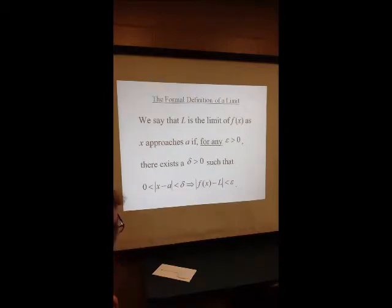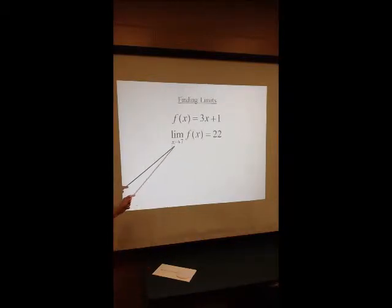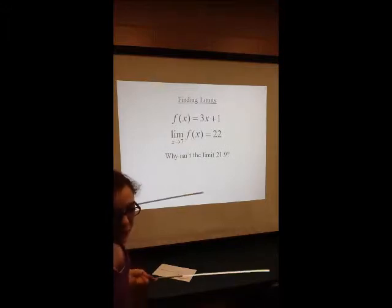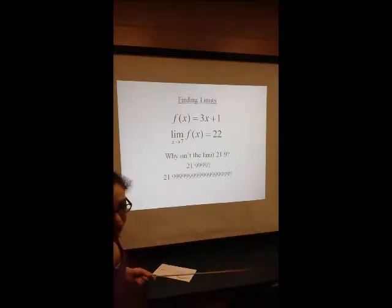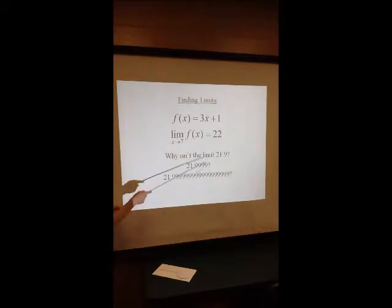So now we're going to demonstrate this definition using an example: f of x equals 3x plus 1. The limit of f of x as x approaches 7 is 22, and we find this by substituting 7 into the equation. But why isn't the limit 21.9, or 21.999...? It is true that as x approaches 7, f of x is approaching those numbers as well. So what makes 22 the limit of f of x as x approaches 7?